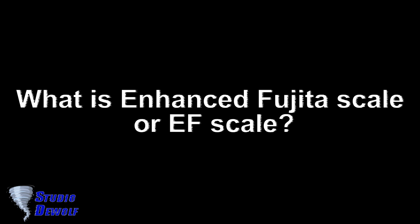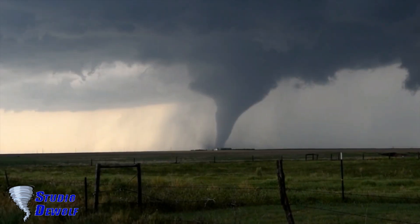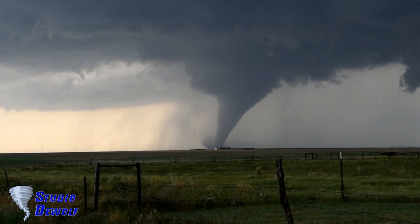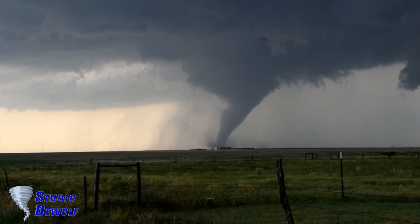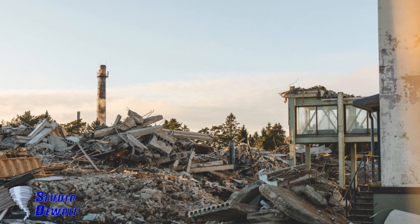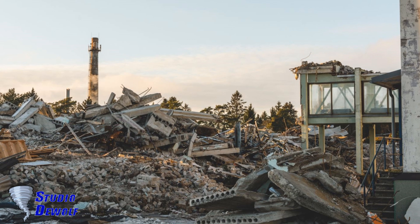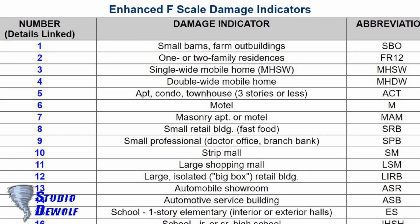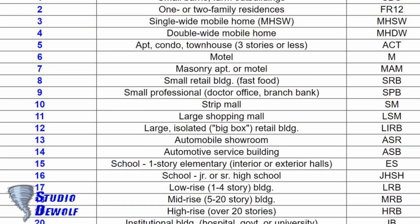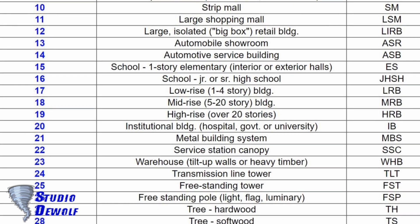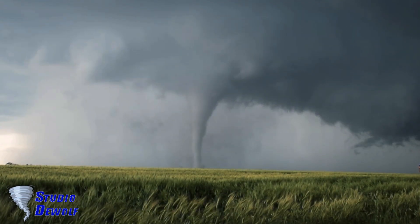What is the Enhanced Fujita Scale, or EF Scale? The EF Scale, which became operational on February 1, 2007, is used to assign a tornado a rating based on estimated wind speeds and related damage. When tornado-related damage is surveyed, it is compared to a list of damage indicators, DIs, and degrees of damage, DODs, which help better estimate the range of wind speeds the tornado likely produced.